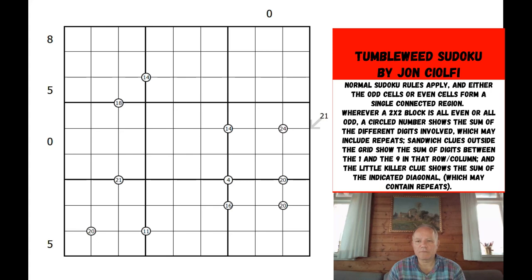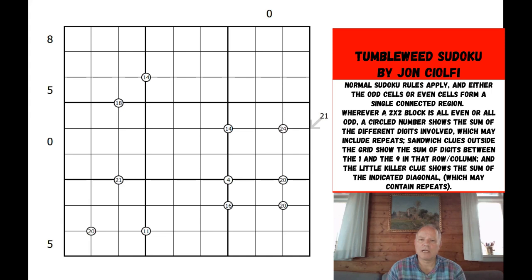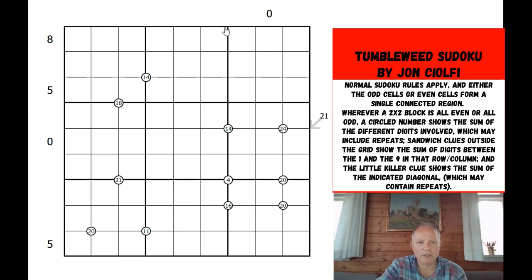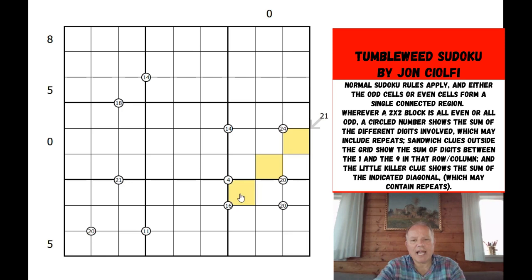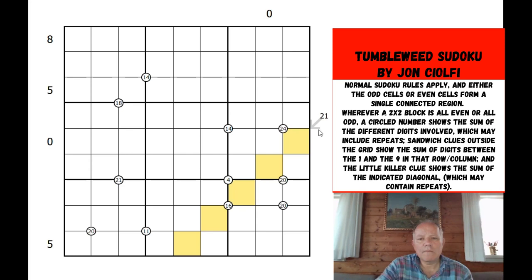This puzzle from Simon Ferre — he calls it Tumbleweed — has a rule I haven't seen before: either all the odd digits or all the even digits in the puzzle have to be in one connected region. We've got three types of clues: sandwich clues, which are the normal sum of the digits between the one and the nine in that row or column.